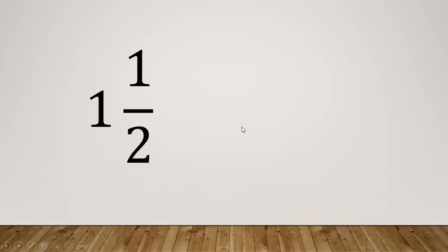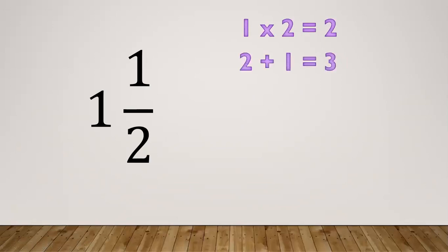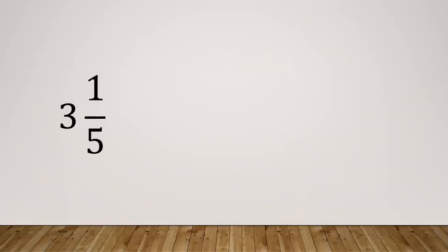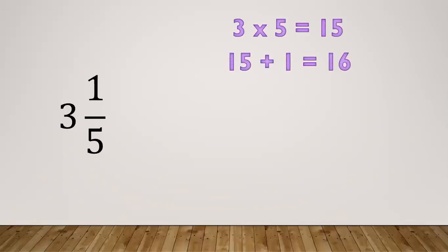Another example: 1 and 1/2. Multiply 1 times 2 equals 2, then 2 plus 1 equals 3. Copy the denominator — so the improper fraction is 3/2. Another one: 3 and 1/5. Multiply 3 times 5 equals 15, then 15 plus 1 equals 16. So the improper fraction is 16/5.